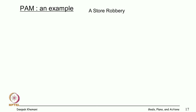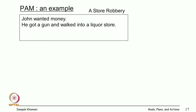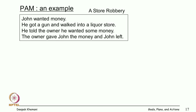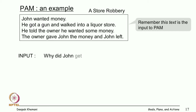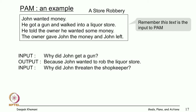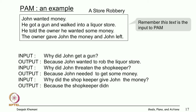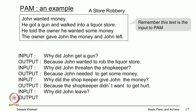Let us look at an example by PAM — a store robbery. John wanted some money, he got a gun, walked into a liquor store, told the owner he wanted some money, the owner gave it to him, and John left. PAM's output: why did John get a gun? Because he wanted to rob the liquor store. Why did John threaten the shopkeeper? Because John needed to get some money. Why did the shopkeeper give the money? Because the shopkeeper did not want to get hurt. Why did John leave? Because he did not want to get caught.